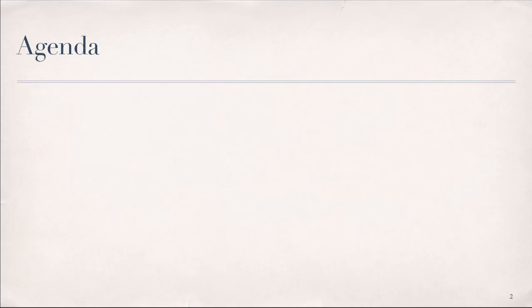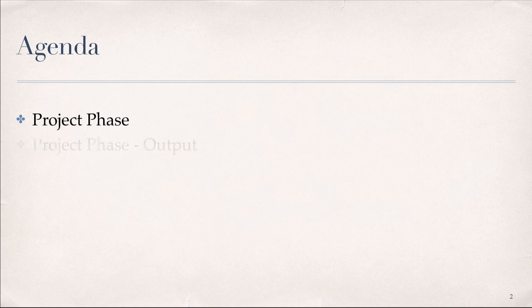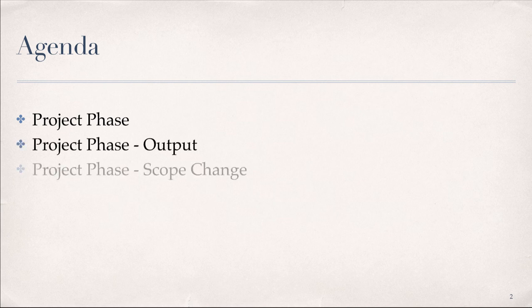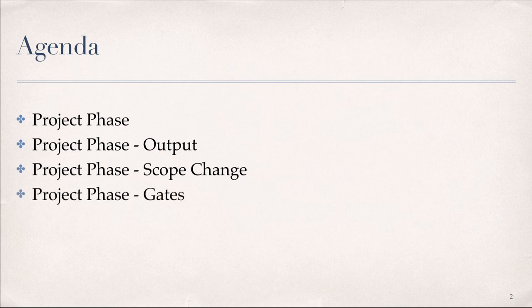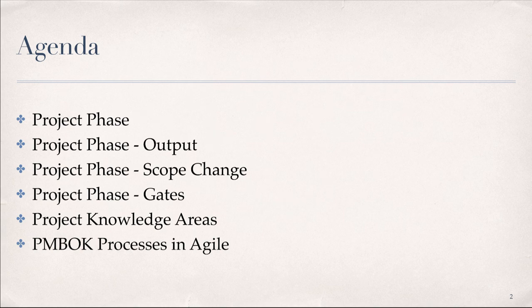Here is our agenda for this module. We have a fair amount of material to cover, including an alternate definition of a project phase, a look at the project phase defined by output, project scope change within a phase, project phase gates and formal work products, project management knowledge areas and processes, PMBOK knowledge areas and Agile, and next steps.